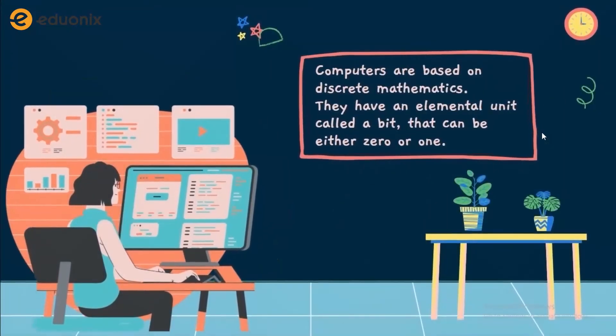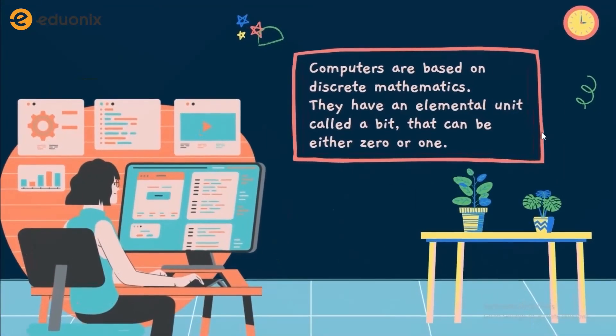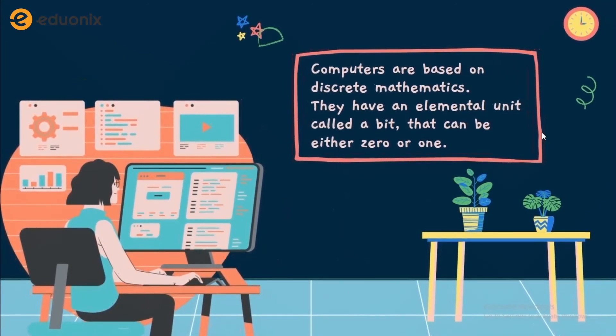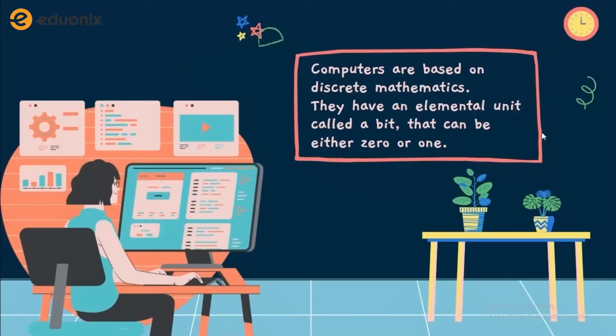The reason we're talking about discrete mathematics and not continuous mathematics is that everything in computers — so programming — has to do with discrete mathematics. I'm sure you've heard this before: computers are just a bunch of zeros and ones. Those are two values — it's either zero or one. So in computers, we are always dealing with discrete mathematics, and that's why it's so important to get to know discrete mathematics before jumping into programming.